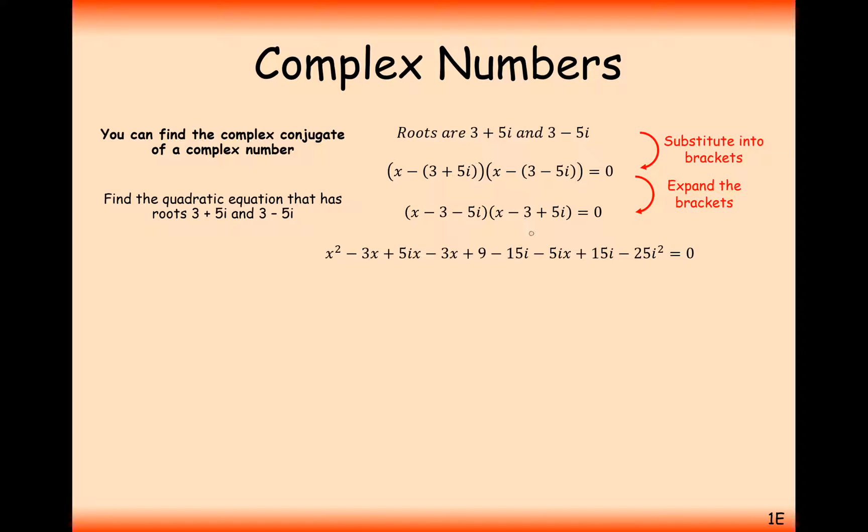All that's left for you to do is expand the brackets. Be really careful here. You should get nine components that come out of this expansion. x times x, x times minus 3, and x times 5i. Then it's minus 3 times x, minus 3 times minus 3, minus 3 times 5i, and minus 5i times x, minus 5i times minus 3, and minus 5i times positive 5i.